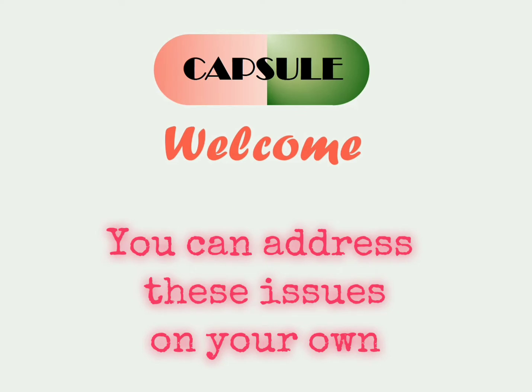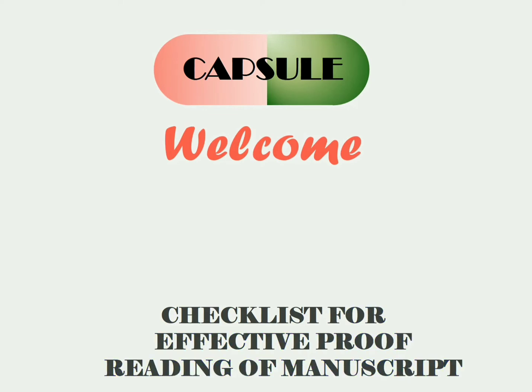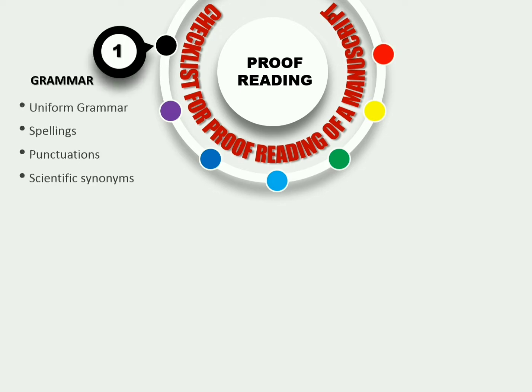You can address these issues on your own by employing a proper strategy. A good strategy needs pointwise enumeration. This video tells about the key checklist for effective proofreading. Watch this whole video if you want to avoid frequent rejections from journals of repute. After watching, you'll understand how readability can be enhanced by following these checklist points.